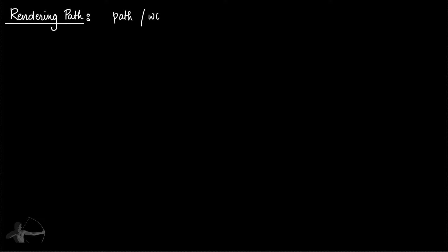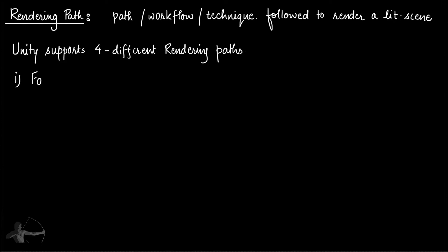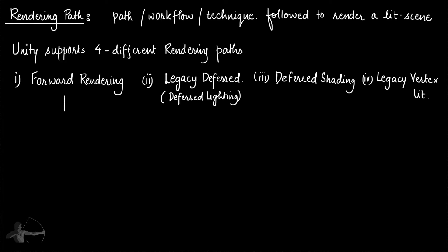Now comes the rendering path. The path, workflow, or technique followed to render a lit scene is called a rendering path. Unity supports four different rendering paths: one is forward rendering; another is legacy deferred, also known as deferred lighting; another is deferred shading; and the fourth is legacy vertex lit. Forward rendering provides two different passes that we can use in our shader: one is the base pass, and another is the additional pass.